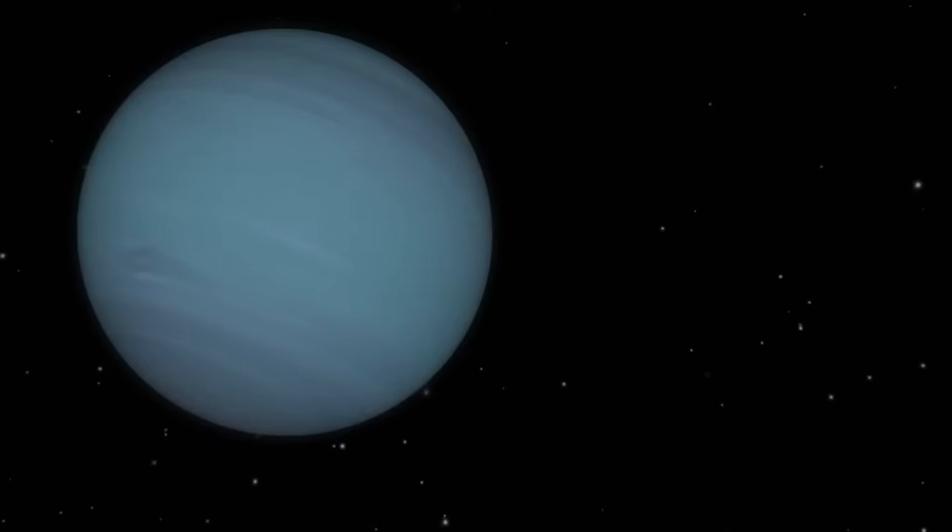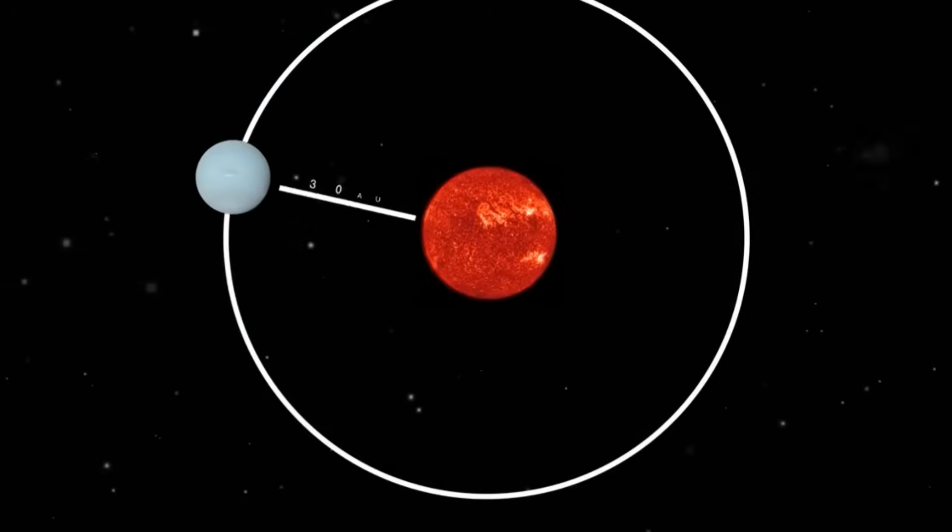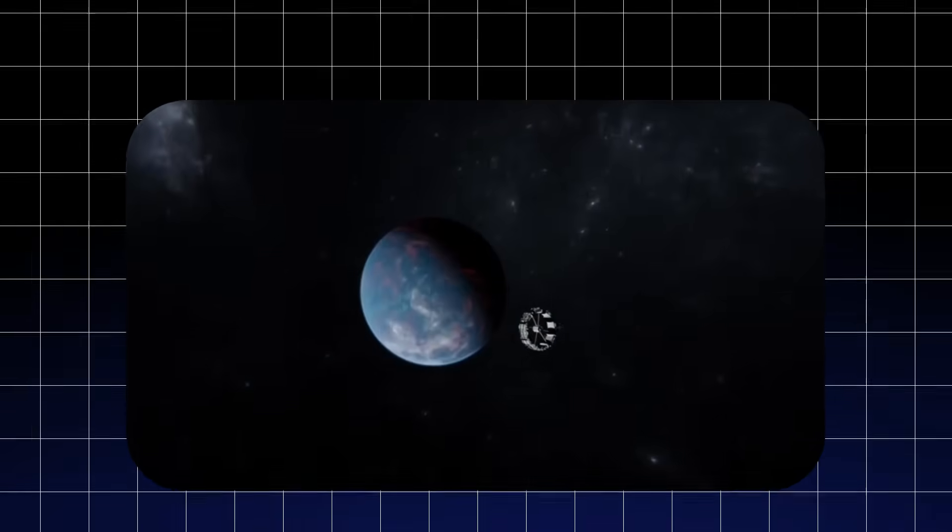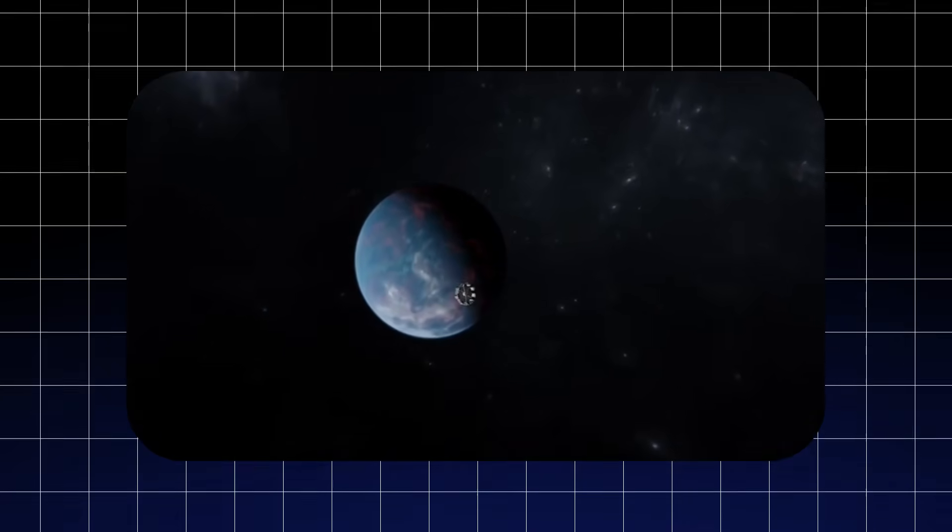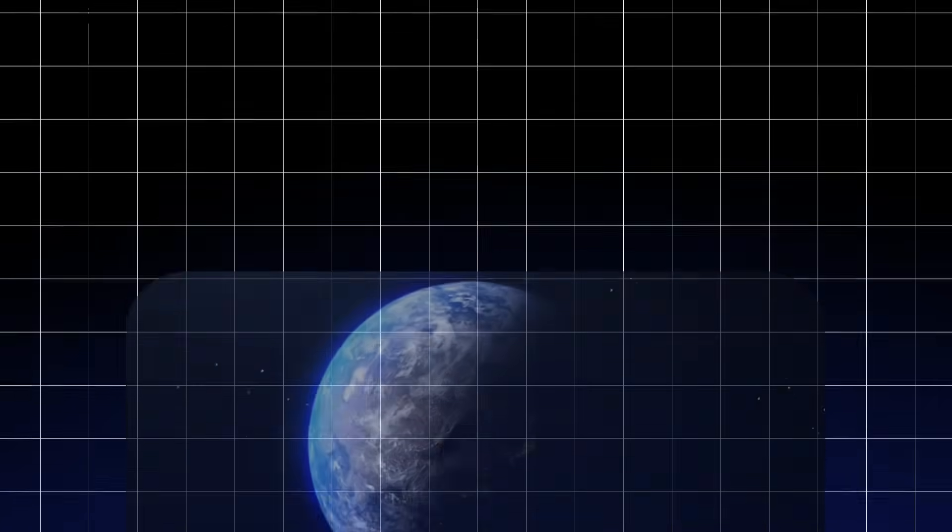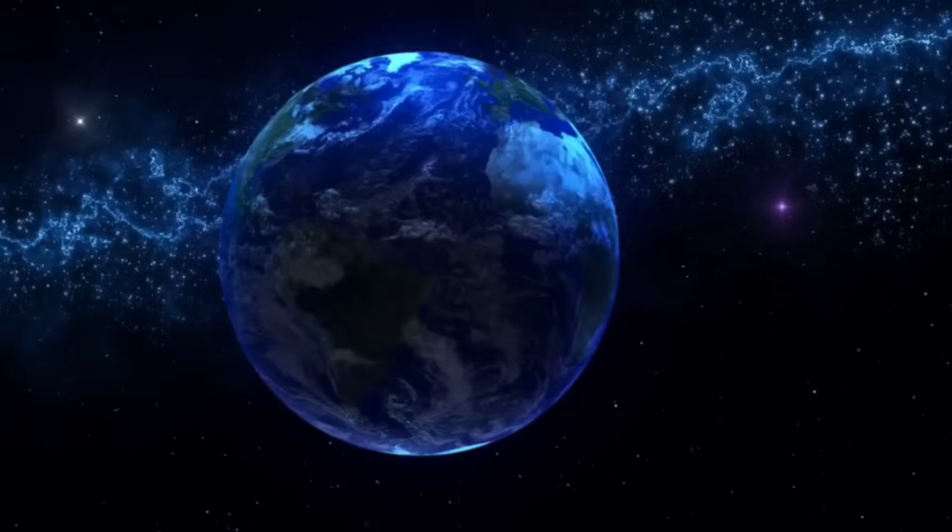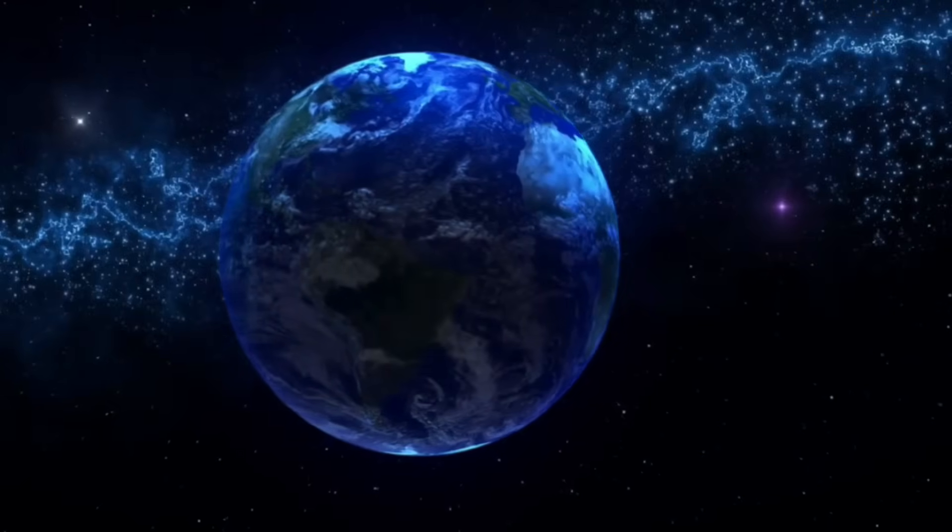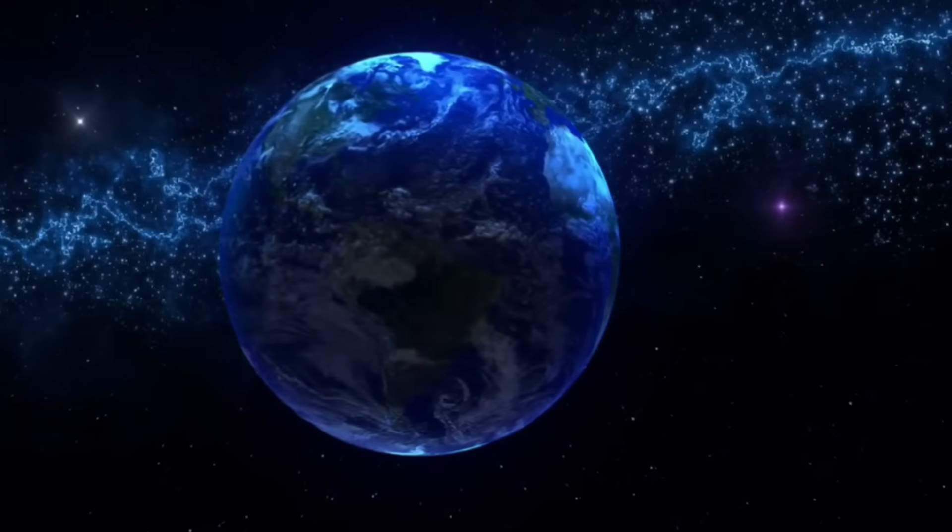Unlike Earth or the rocky planets, Neptune doesn't have a solid surface, so the object didn't leave a crater. Instead, it penetrated deep into the gas layers, its kinetic energy converting into a massive atmospheric explosion that expanded and roiled through the hydrogen and helium envelope.